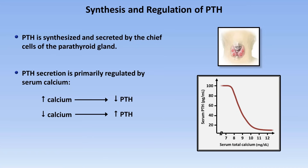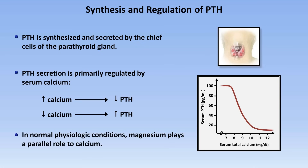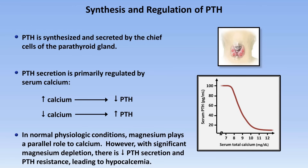The role of magnesium in PTH regulation is complicated and not completely understood. In normal physiologic conditions, magnesium impacts PTH secretion in a way parallel to calcium, such that small increases in serum magnesium lead to small decreases in PTH secretion, and small decreases in magnesium lead to small increases in PTH. However, in states of significant magnesium depletion, there is an impairment in PTH secretion and resistance to PTH action, from which hypocalcemia can develop.